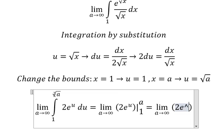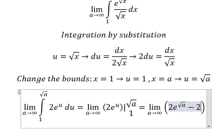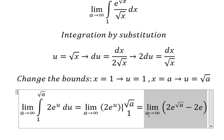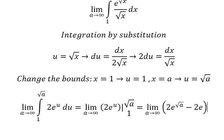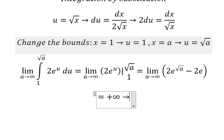Substituting in the bounds, we have 2e to the power of the square root of a — I almost forgot the square root of a — minus 2e to the power of 1. Now we can see that when a goes to positive infinity, the square root of a will go to positive infinity, and e to the power of positive infinity equals positive infinity.